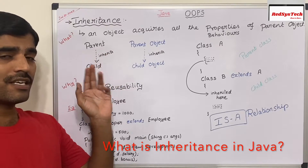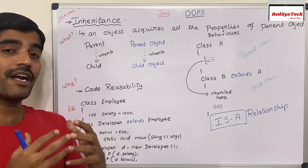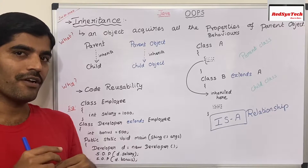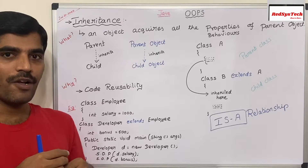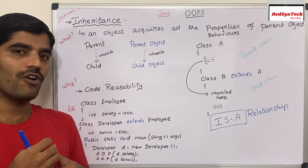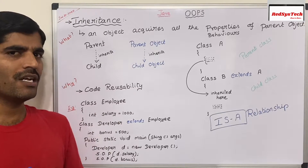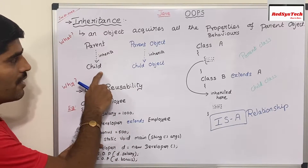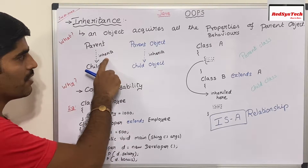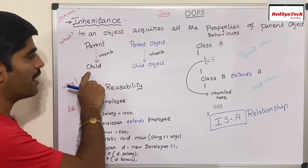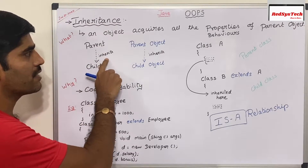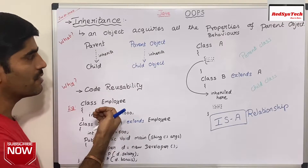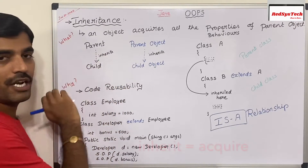Inheritance is nothing but the mechanism in which an object is able to acquire or inherit all the properties and behaviors of a parent object. So let's say a child is inheriting the properties from a parent. The child has all the characteristics from the parent. Inherit means passing the properties and behaviors from parent to the child.